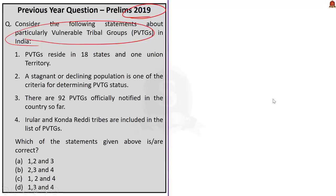Pause the video for one minute and try to solve this question. Consider the following statements about Particularly Vulnerable Tribal Groups (PVTGs) in India. Statement 1: PVTGs reside in 18 states and one union territory. Statement 2: A stagnant or declining population is one of the criteria for determining PVTG status. Statement 3: There are 92 PVTGs officially notified in the country. Statement 4: Irular and Kondareddi tribes are included in the list of PVTGs.